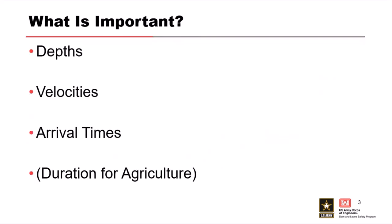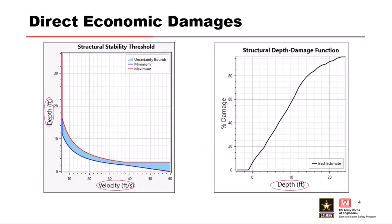Starting with what's important: you can get lots of information out of a hydraulic model, but these are the things you actually care about. You want depths, velocities, arrival times, and duration if you are worrying about agriculture. The first three are really what we're going to focus on. Those are huge because they get used in all the functions in LifeSim. These are straight out of the UI — stability criteria are functions of depth and velocity, big hydraulic variables.